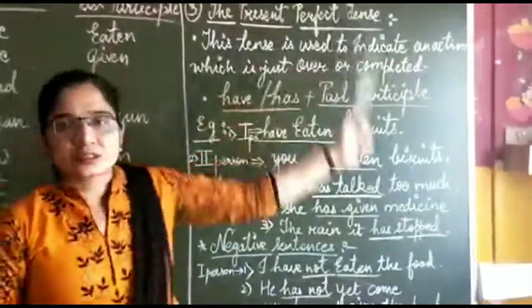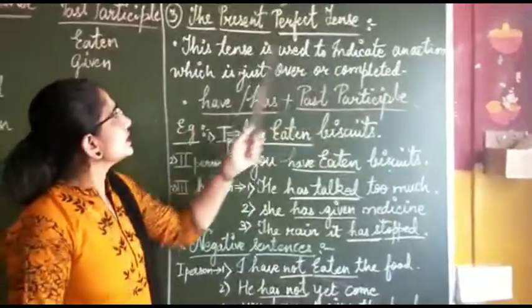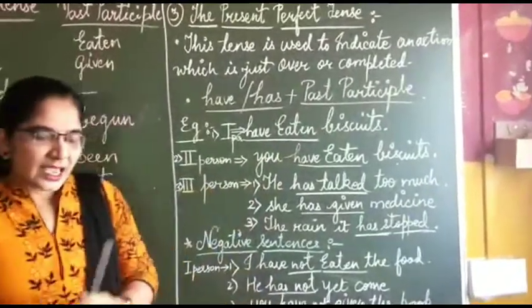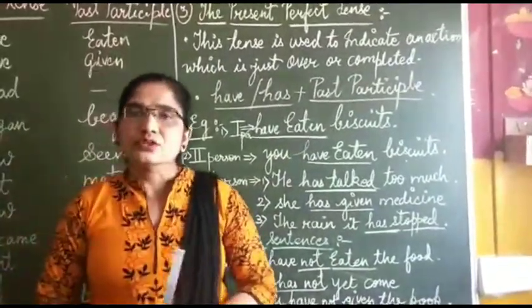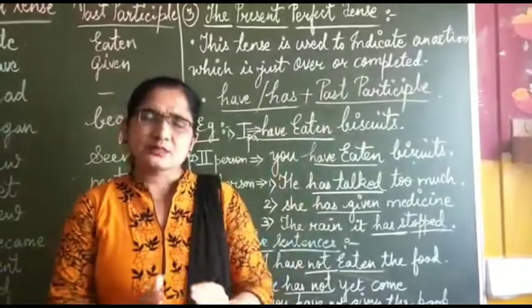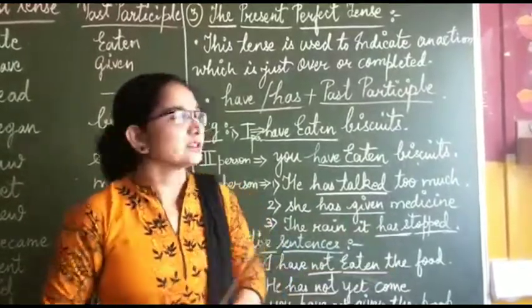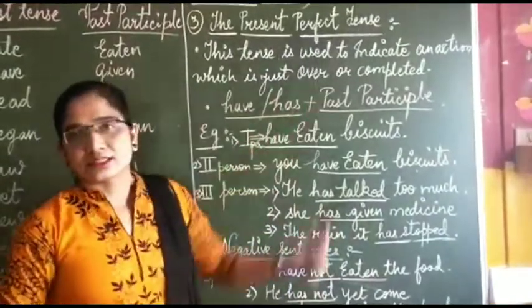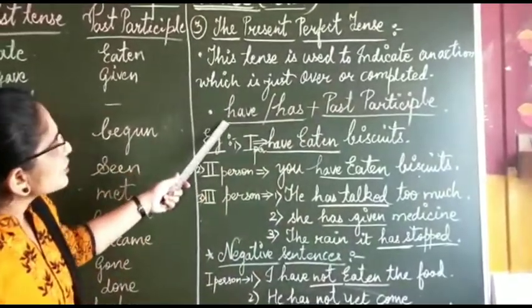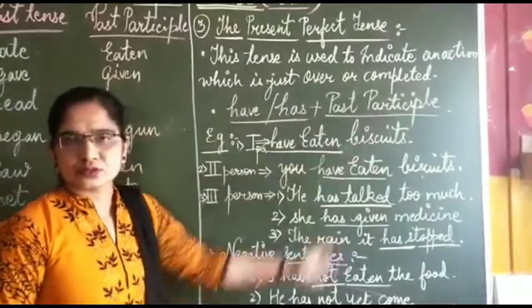What is the present perfect tense? This tense is used to indicate an action which is just over or completed. That means the verb which has just been completed — today itself, now itself. That is what we use the present perfect tense for. We have to use 'have' or 'has' plus the past participle.